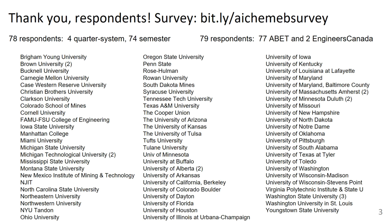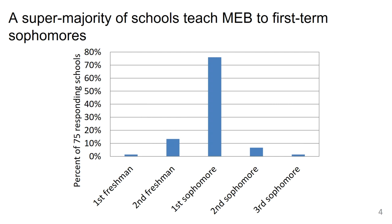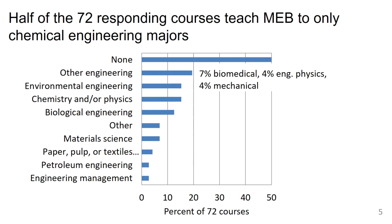Regarding the type of system that the schools are on, four of them are on the quarter system and 74 are on the semester system. 77 of the schools are ABET accredited and two are accredited by Engineers Canada. The vast majority of the schools teach material and energy balances to first-term sophomores, with some covering the class anywhere from first-term freshman through third-term sophomore year.